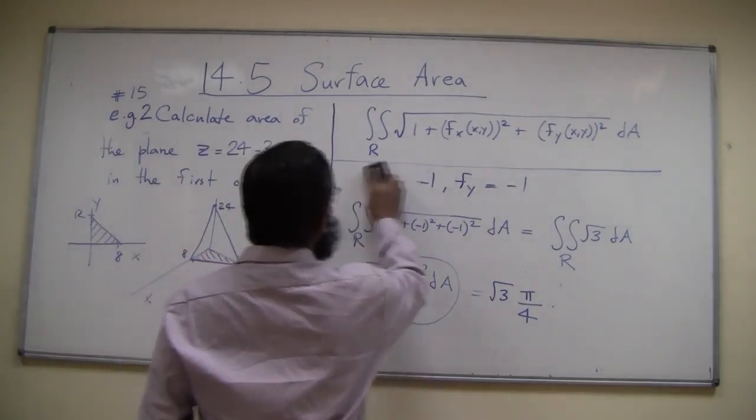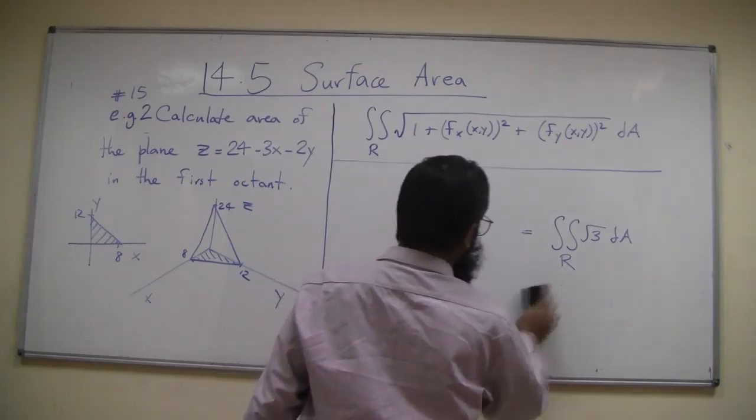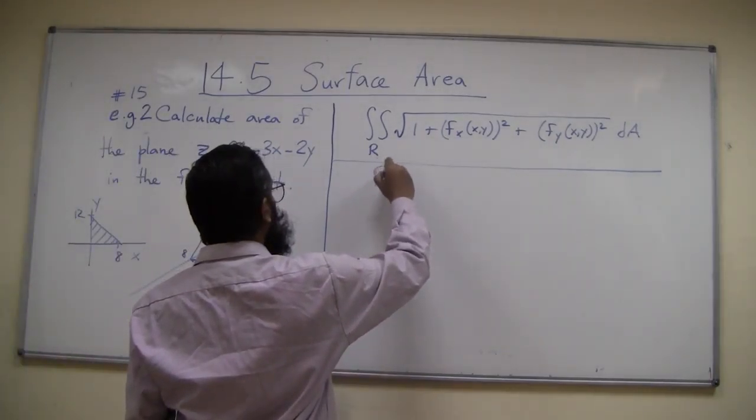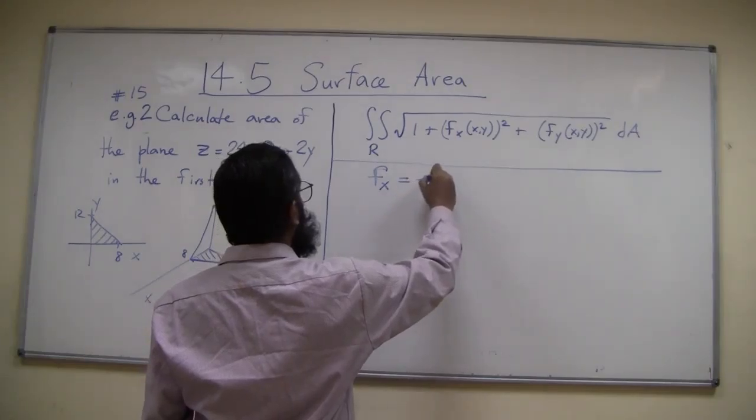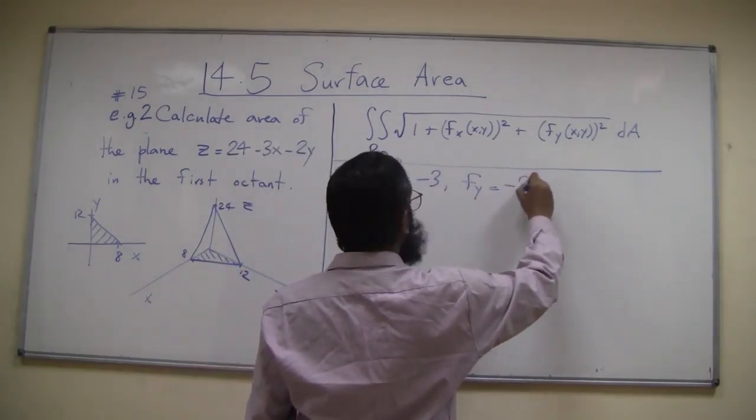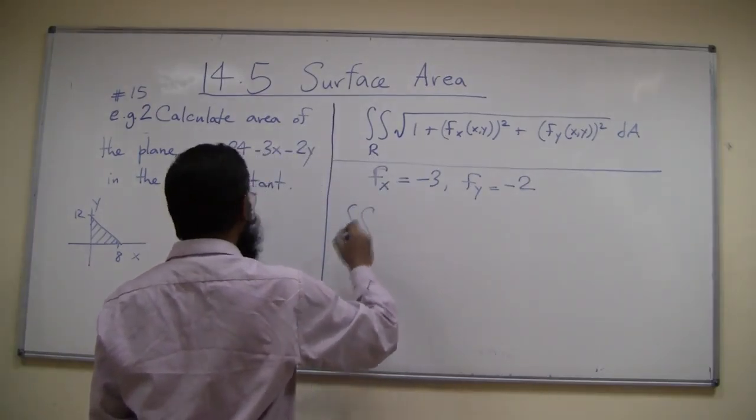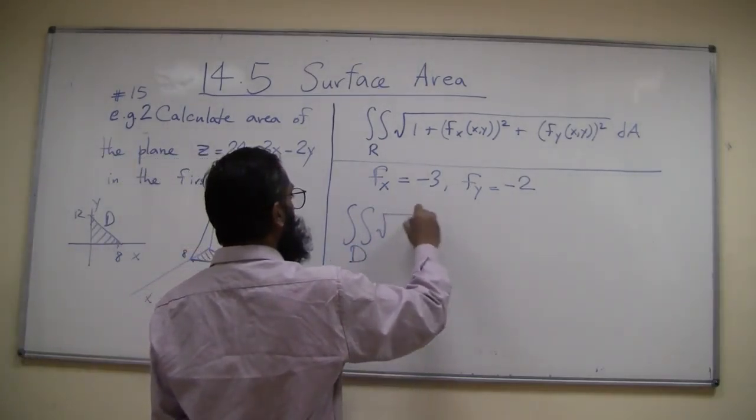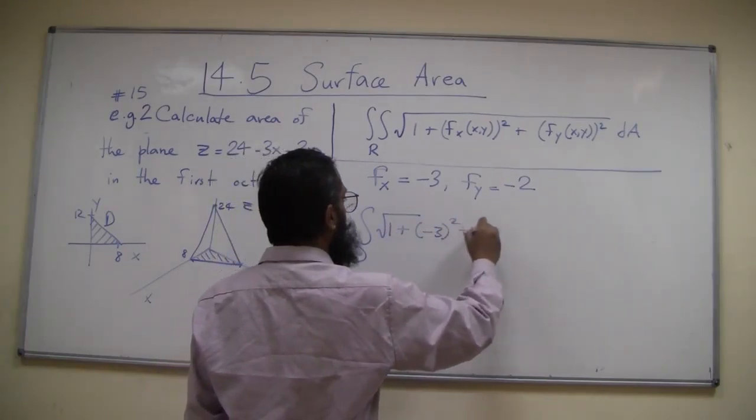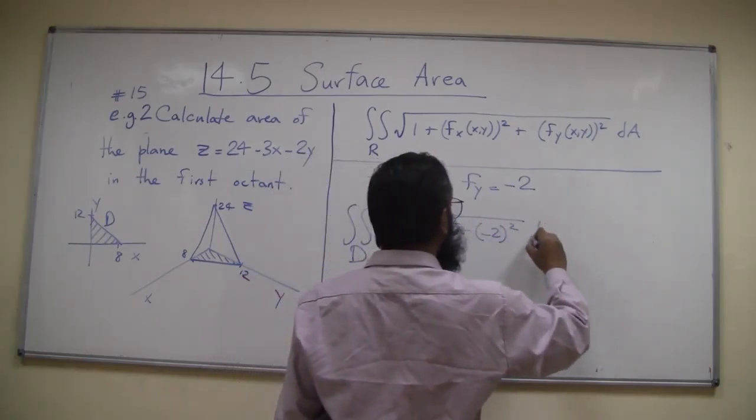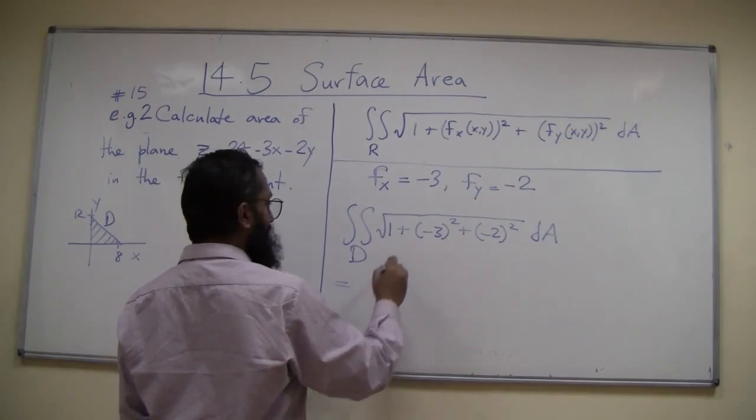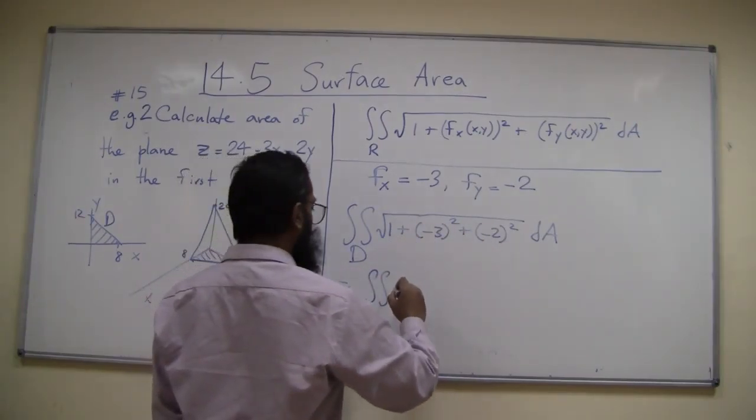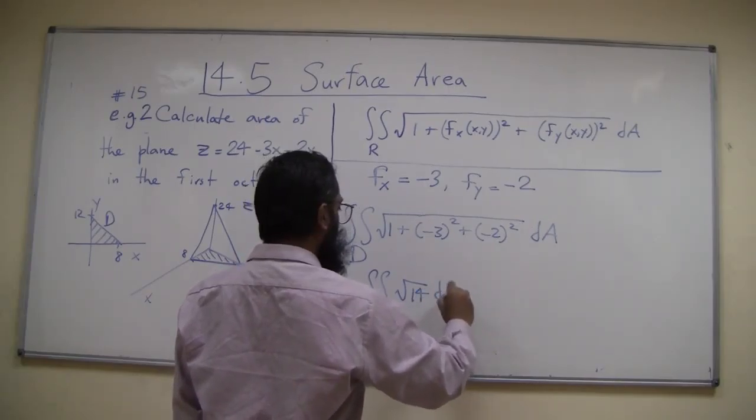Our function is 24 minus 3x minus 2y. Let's calculate the partial derivatives. f sub x is minus 3, f sub y is minus 2. So we'll do the integral over this region D of square root of 1 plus minus 3 squared plus minus 2 squared dA. This is the integral of square root of 14 dA over the region D.